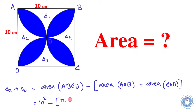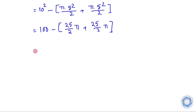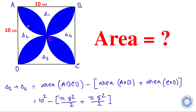Similarly, if we eliminate the semicircular area AOB and BOC from the area of the square, then we will get the area of delta 1 plus delta 3. So let us write that down.